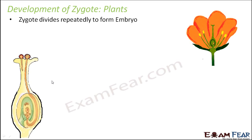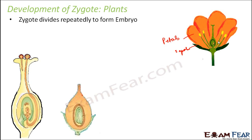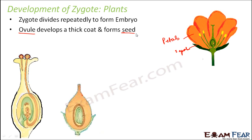Once fertilization has taken place, what happens to the other parts? The petals and sepals all fall off after fertilization. Now the ovule develops a thick coat and forms the seed. So ovule turns into seed. Looking at the diagram, the ovule present inside turns into the seed — just like the seeds you find inside an apple or any fruit. After fertilization, the ovule becomes hard and thick, forming the seed.